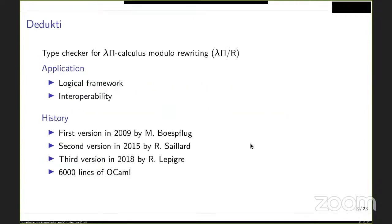DEDUCTIE is a type checker for the lambda pi calculus module rewriting, which is an extension of the lambda calculus with dependent types — types which may depend on values. The 'module rewriting' part means that the user can add arbitrary reduction rules and thus not be limited to the beta reduction of lambda calculus.